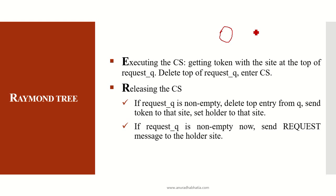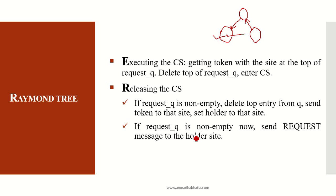If a particular node had the token and someone else is requesting it, once it releases the token the arrows to that particular site change direction. It checks if the queue is non-empty; whichever site asked for the token and this site is done with it, the token is released for that particular site. If the request queue is non-empty, send the request message to the holder site, passing the token through the parent node to the requesting site node. This is how the Raymond Tree algorithm using requesting, executing, and releasing of critical state works.